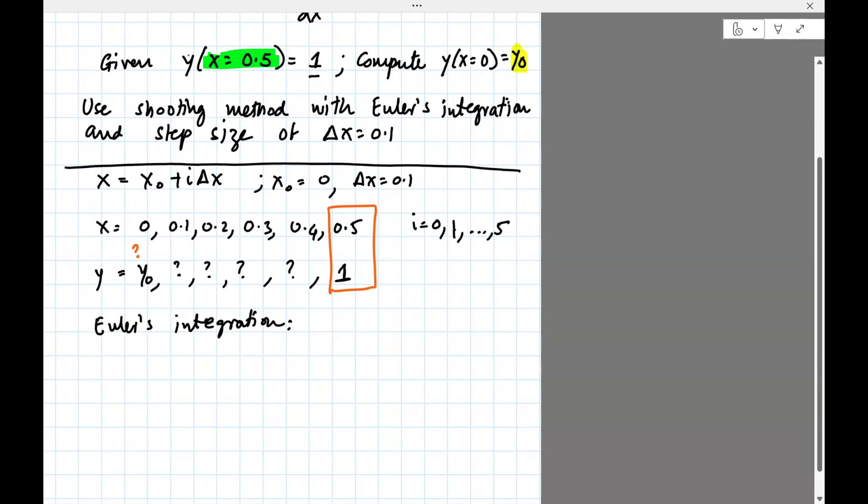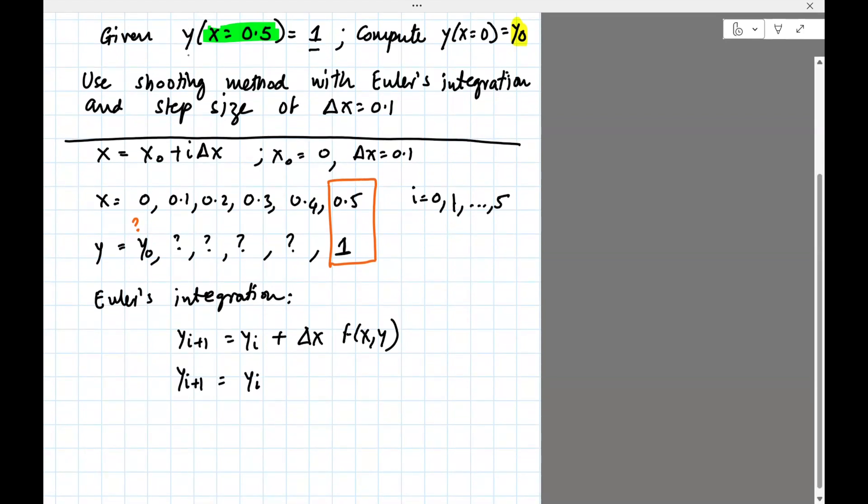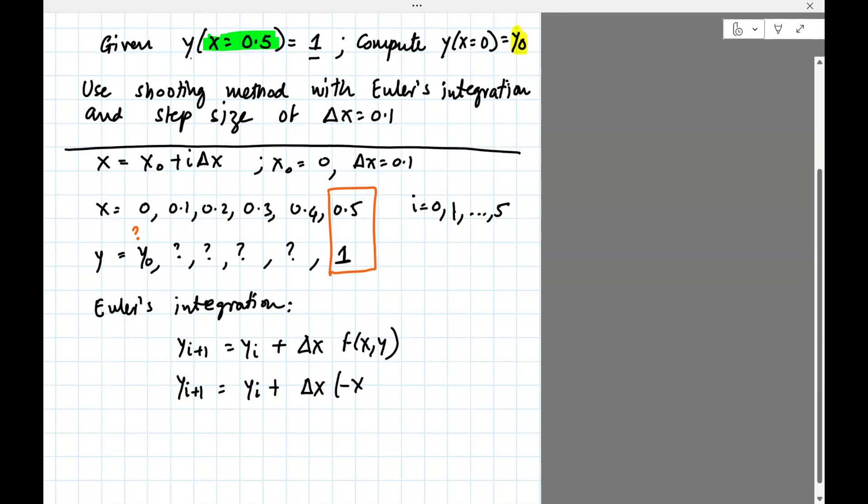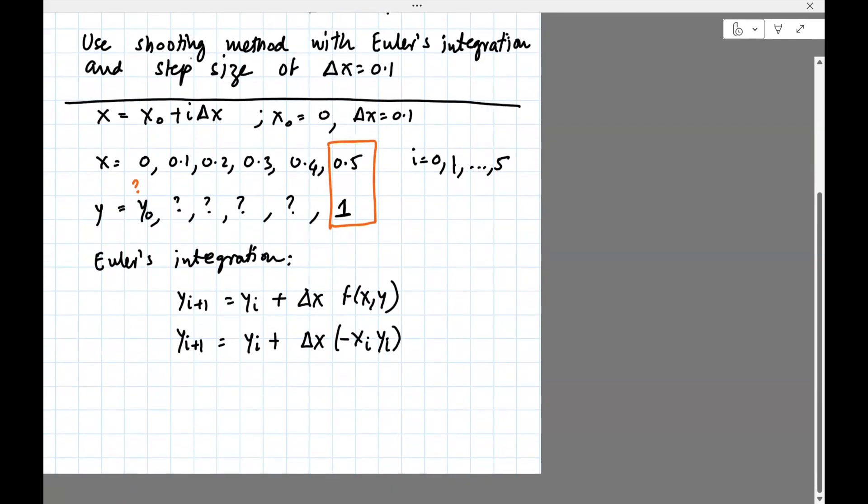Euler's integration. The formula is yi+1 is yi plus delta x f of x, y. I'm just going to simplify this. For this particular problem, we have yi plus delta x. And f of x, y is given to us, it's right here. It's minus xy. So xi, this will be xi yi, 1 minus delta x times xi. So let's write it this way. 1 minus. So this is basically telling how y will evolve as a function of xi.